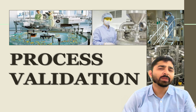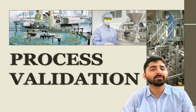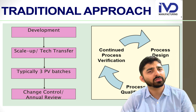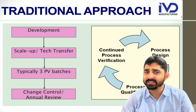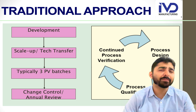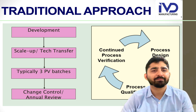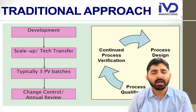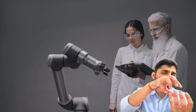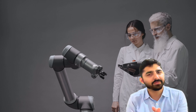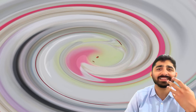First, let me explain the traditional approach of doing process validation. In the traditional approach, we begin with the development phase. The moment any product gets developed in the design phase, it needs to be transferred into a production department. In R&D, whatever project design happens at a pilot scale level, once transferred to production, a scale-up and tech transfer is required. First is the tech transfer, then followed by the scale-up. For example, I was making a product of 5 ml in the R&D phase.